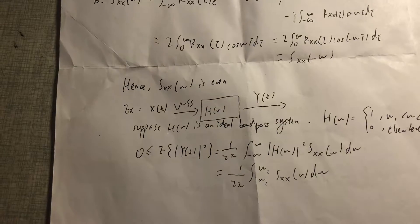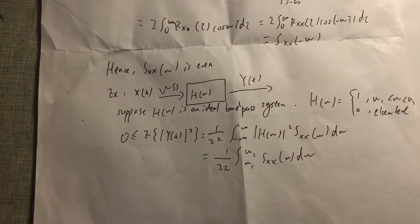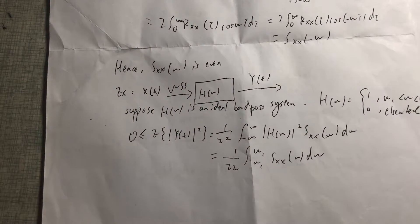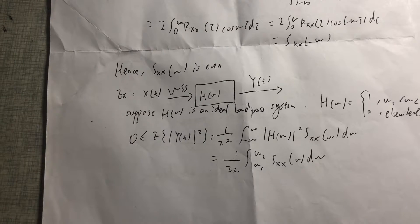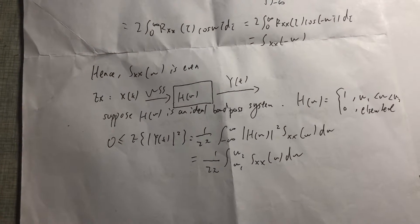For example, to show S_XX(ω) is non-negative, I'll discuss the following example. We have X(t) transformed by WSS through H(ω) to get Y(t). Suppose H(ω) is an ideal bandpass system.